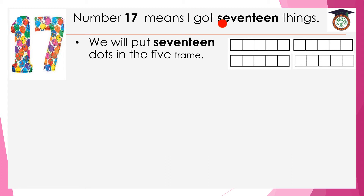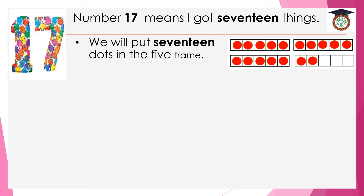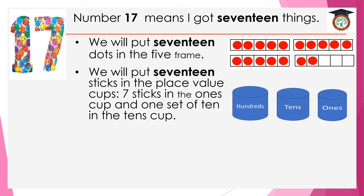Here we have 10 dots, and then 11, 12, 13, 14, 15, 16, 17 dots in the 5-frame. Now we will put 17 sticks in the place value cups: 1, 2, 3, 4, 5, 6, and 7 sticks in the ones cup, and one set of ten in the tens cup.